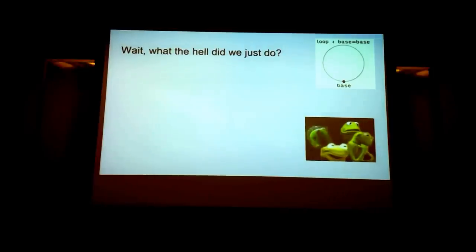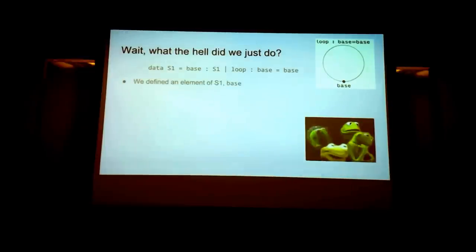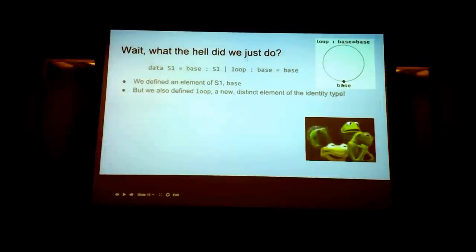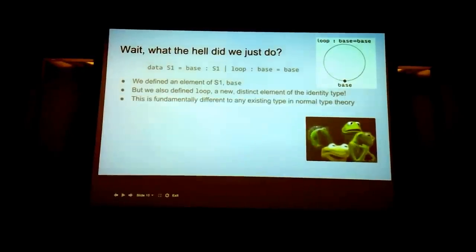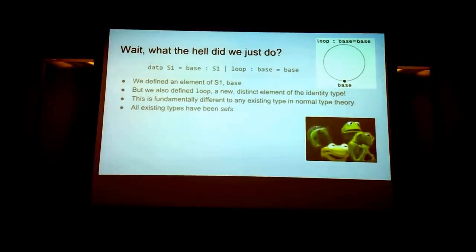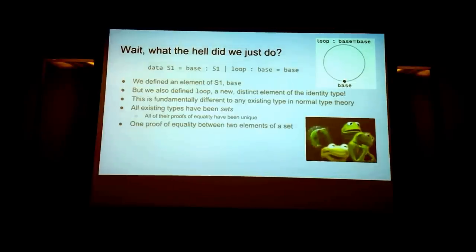What did we just do? This is a representation of the circle using the new constructor — it leaves out the trivial reflexivity constructor. We define an element of S1, base, which is a point, but we also defined loop, which is a path. This is fundamentally different from any existing type in Martin-Löf Type Theory. All existing types have been sets, where all proofs of equality are uniquely reflexivity. There's one proof of equality between two elements of the set, which is reflexivity.